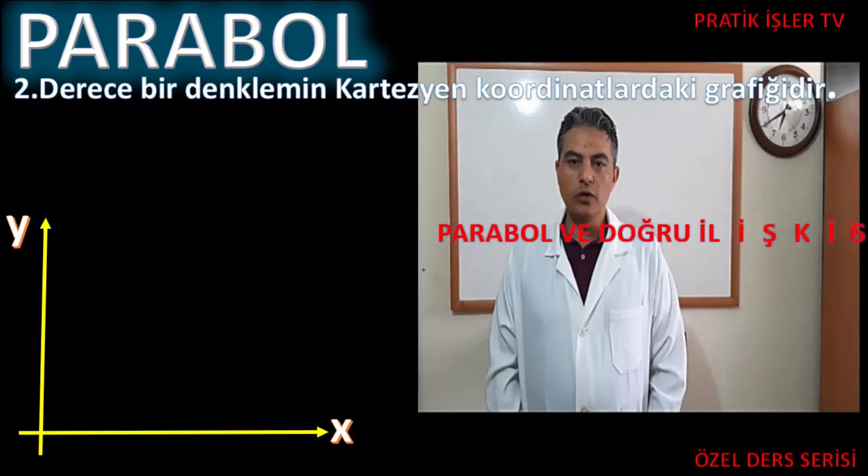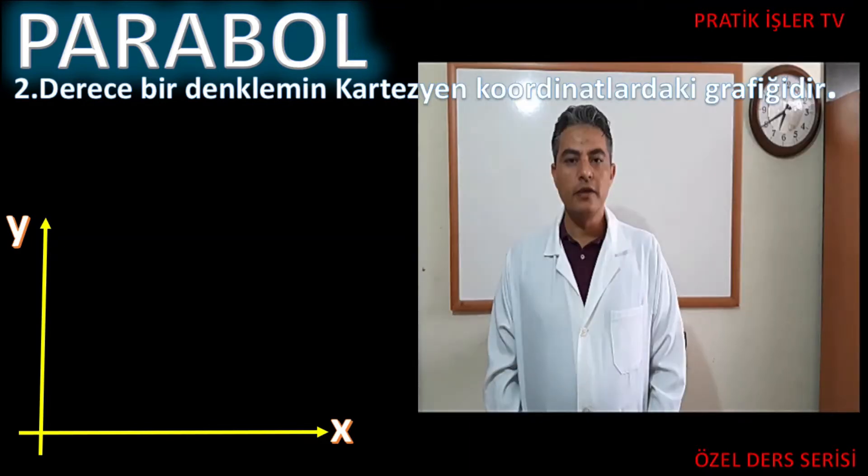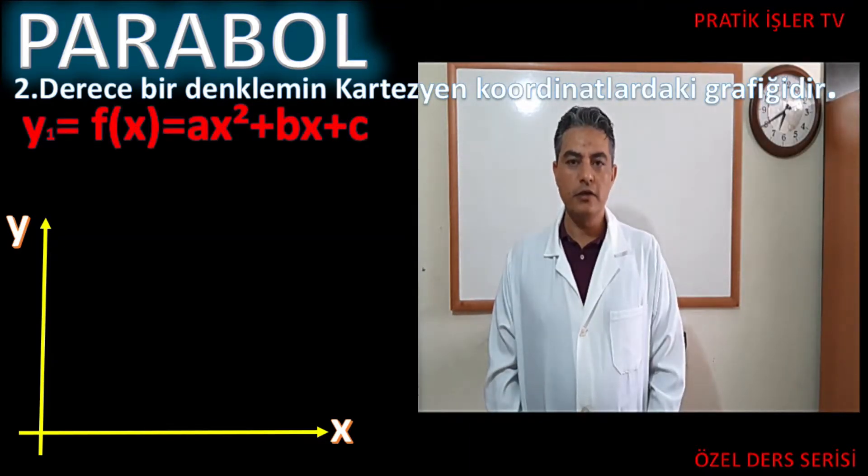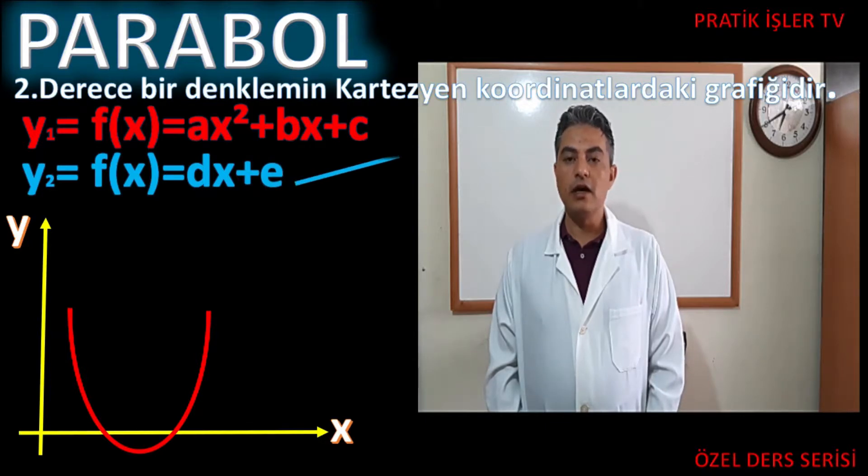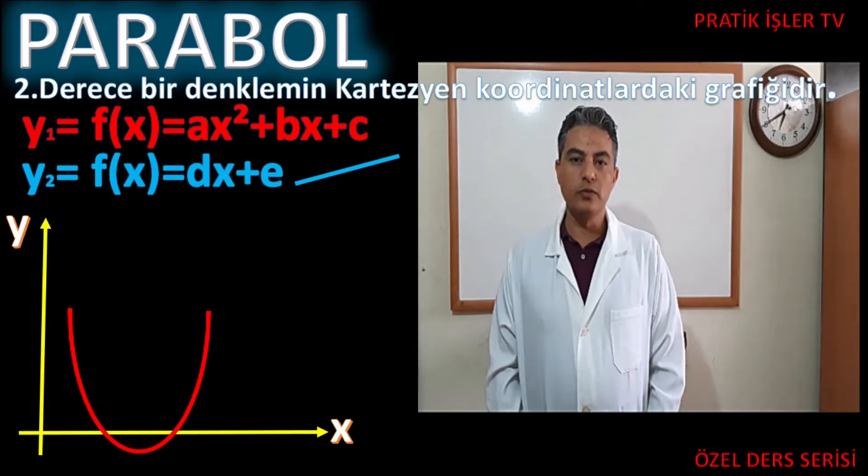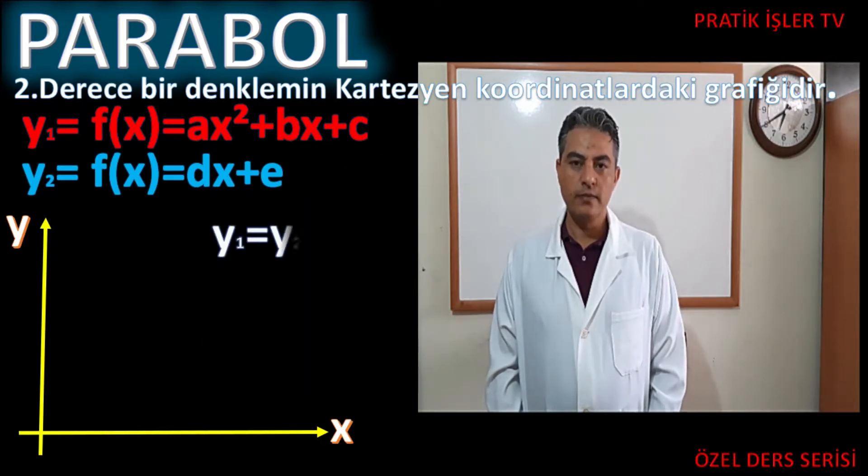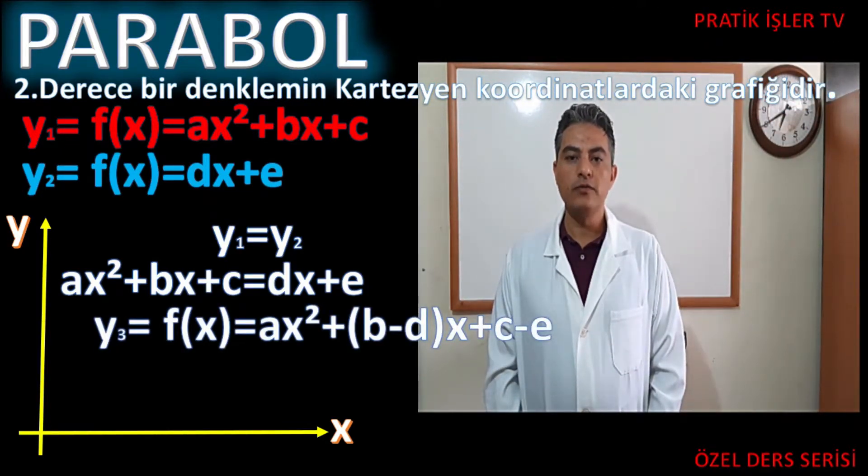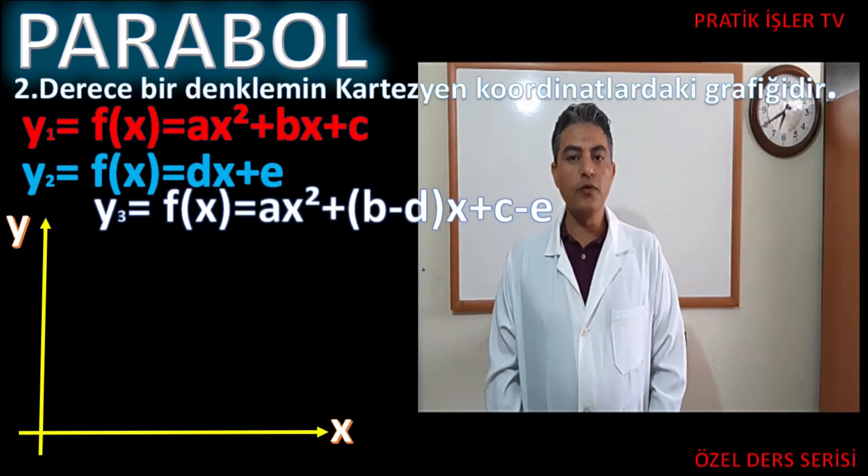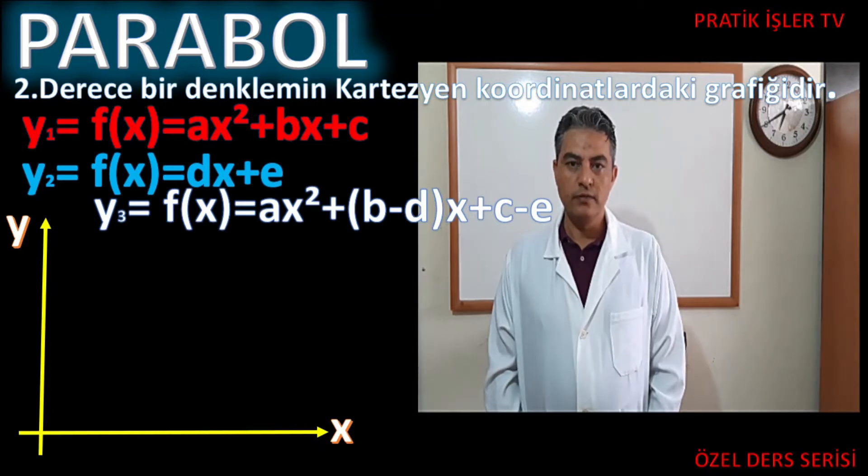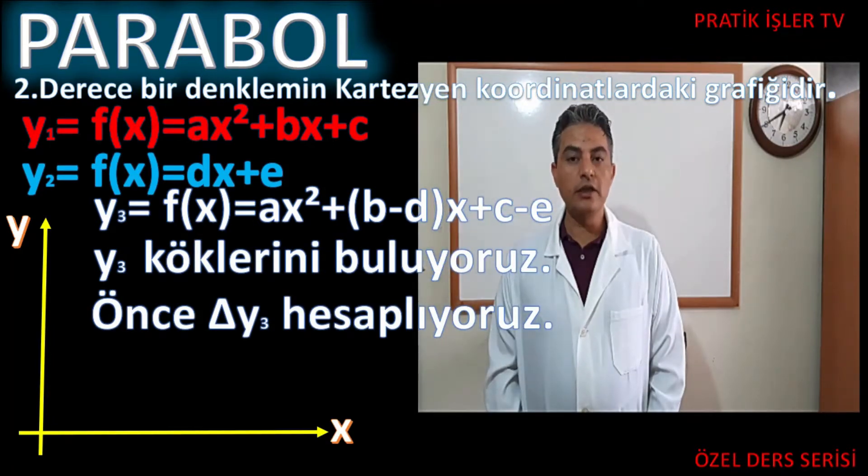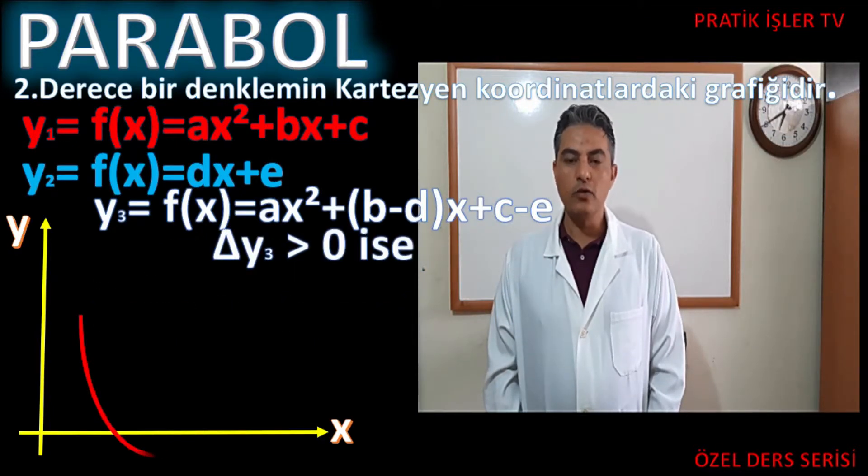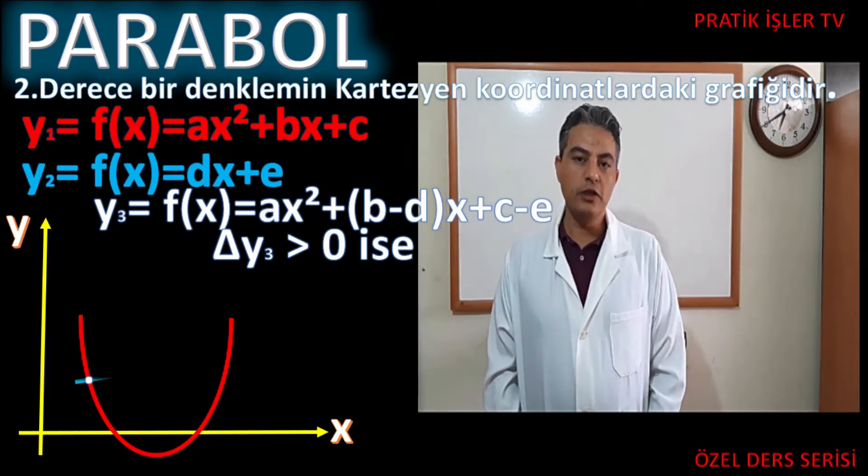Parabolün bir doğru ile olan ilişkisini inceleyelim. y eşittir ax² artı bx artı c gibi bir parabol fonksiyonumuz ile y eşittir dx artı e gibi bir doğrumuzun birbirine göre durumlarını inceleyelim. Bunu çözerken her iki y değerini de eşitliyoruz. Sonra taraf tarafa düzenliyoruz. Ve y3 gibi yeni bir parabol fonksiyonu elde ediyoruz. Bu fonksiyonun köklerini hesaplıyoruz. Bunun için de delta yöntemine başvuruyoruz. Eğer elde ettiğimiz delta sıfırdan büyük ise o zaman bu doğru parabolu iki noktada keser diyoruz.